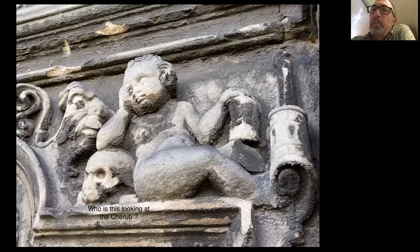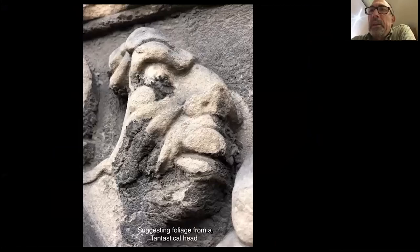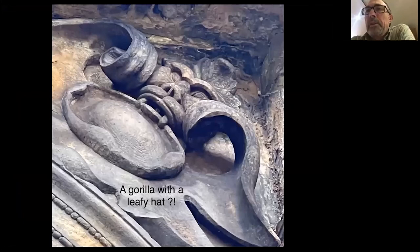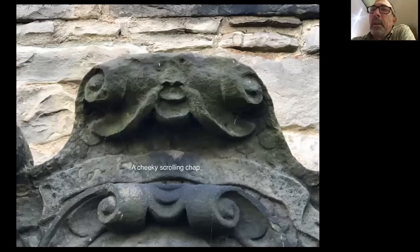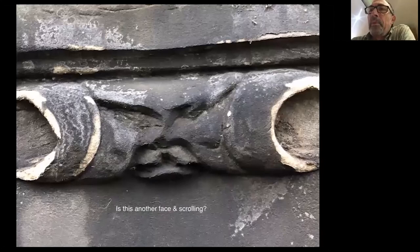Looking at that face's counterpart across from it, and the chap looking at the cherub - there's a leaf-like protrusion coming out of his nose. On Elizabeth Patton's memorial in the top right-hand corner, often overlooked, is a strange gorilla-like feature - but if you look at his forehead, he's wearing a leafy hat. Very strange creature. And then there are faces where the scrolling is taken to the max - is that trying to suggest swirls of foliage? And there are cheeky little faces cropping up around various parts of the memorials, hiding in plain sight, and some stranger creatures besides.